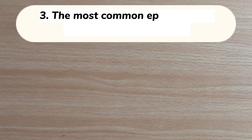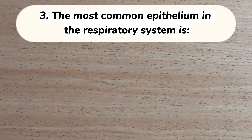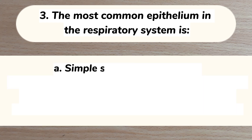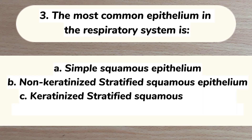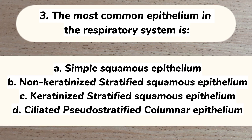Number 3. The most common epithelium in the respiratory system is: A. Simple squamous epithelium. B. Non-keratinized stratified squamous epithelium. C. Keratinized stratified squamous epithelium. D. Ciliated pseudostratified columnar epithelium. Answer: D. Ciliated pseudostratified columnar epithelium.